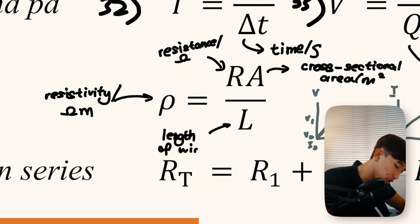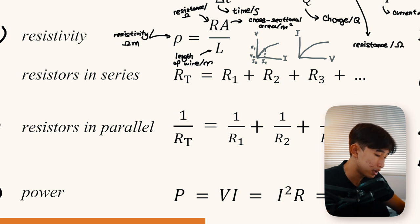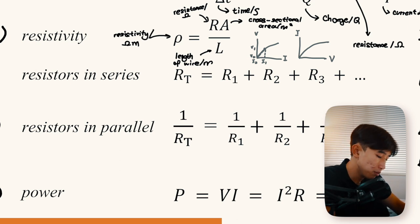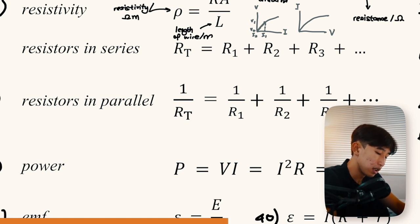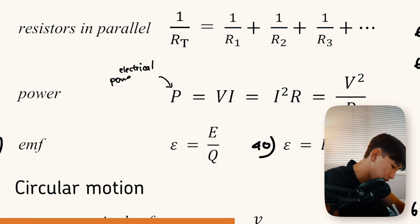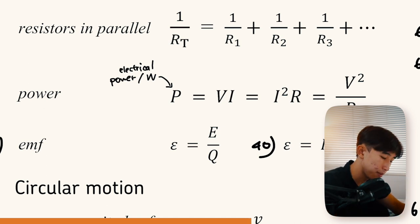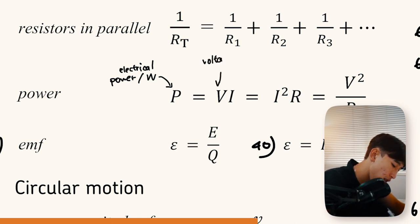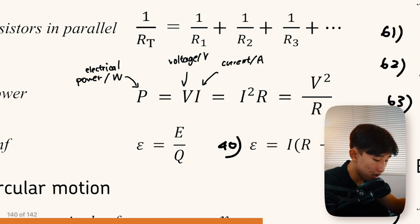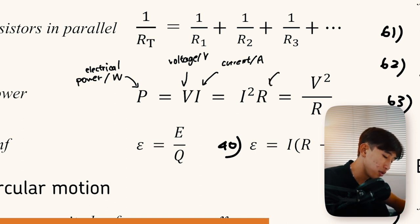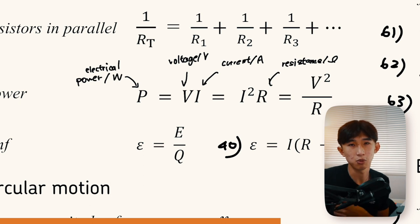Electrical power in watts is P = IV. Substituting Ohm's law (V = IR) gives alternative forms: P = I²R or P = V²/R. The formula sheet conveniently lists all three derivations so you can choose the appropriate form depending on what information is given in the question.